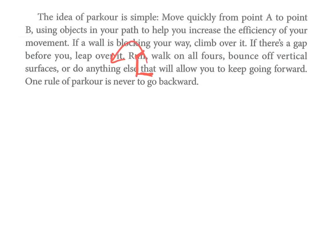or do anything else，什么样的事情？形容词子句：that will allow，allow是允许，允许你keep going forward，keep就是一直保持，going就是走，forward就是向前，能够让你一直向前的都可以。